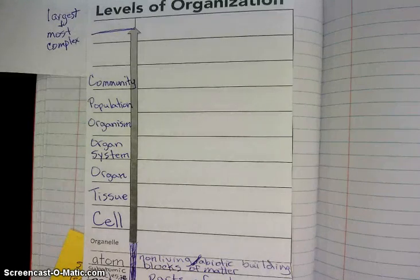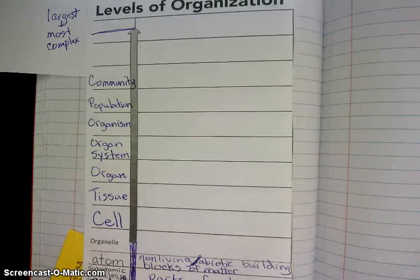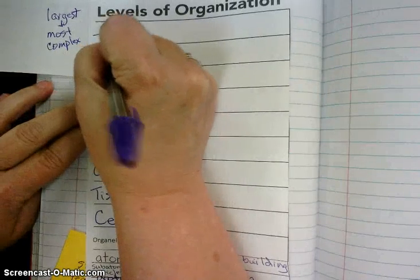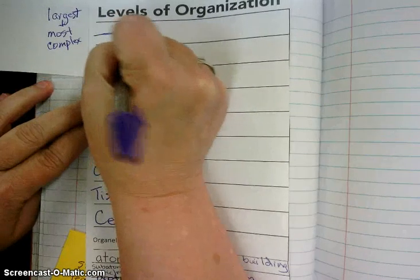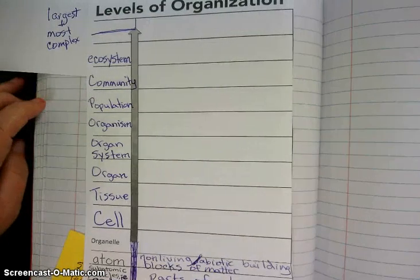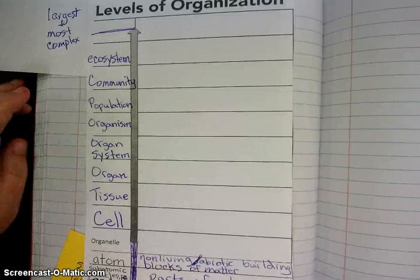Now, a community that has a bunch of different populations and has abiotic and biotic factors, we call that an ecosystem. So when you add in all of the abiotic things with the biotic, you have an ecosystem.